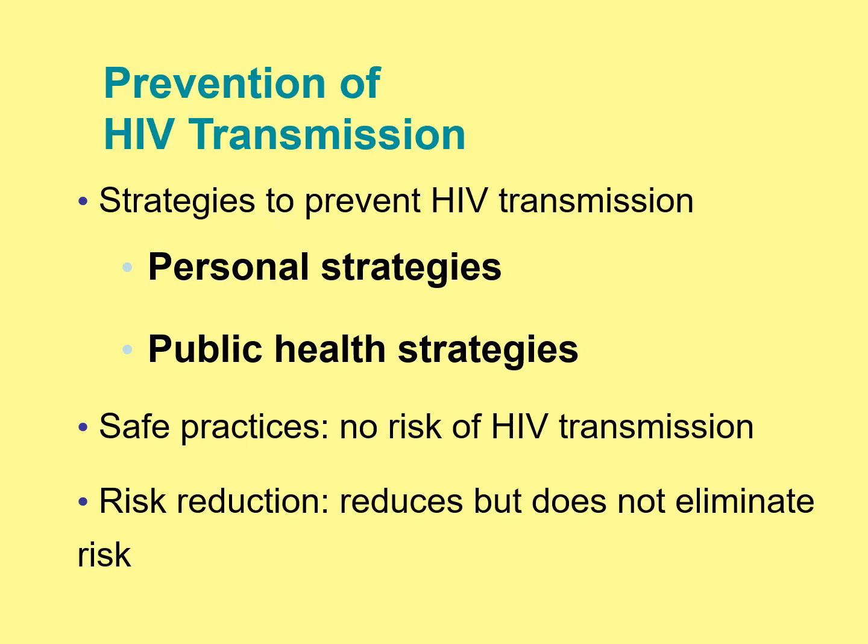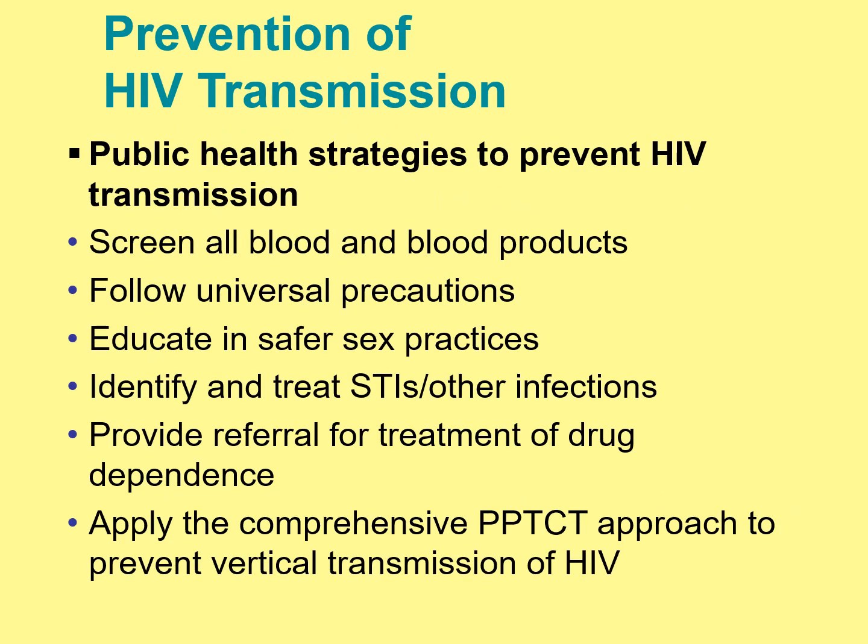Strategies to prevent HIV transmission include personal and public health strategies: safe practices with no risk of HIV transmission, and risk reduction which reduces but does not eliminate risk. Public health strategies include screening all blood and blood products, following universal precautions, safe sex education, identifying and treating sexually transmitted illnesses, providing referrals for treatment of drug dependence, and applying the comprehensive approach to prevent vertical transmission of HIV.